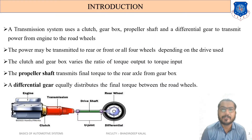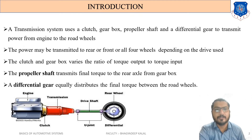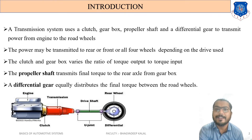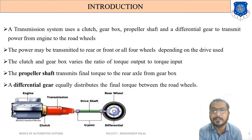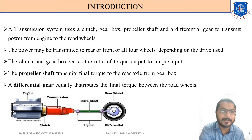Let me first understand the introduction of the transmission system. A transmission system uses a clutch, gearbox, propeller shaft, and differential gear to transmit power from the engine to the rear wheel. In the diagram, we have the engine, followed by the clutch, then the transmission system.